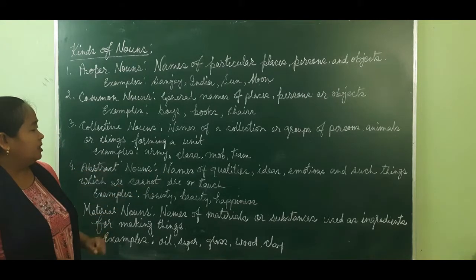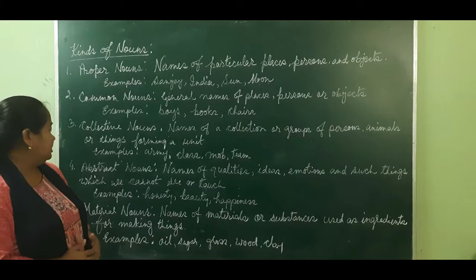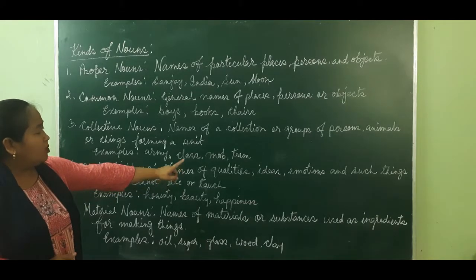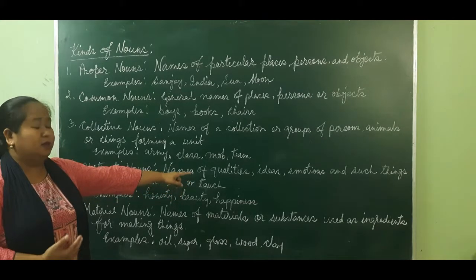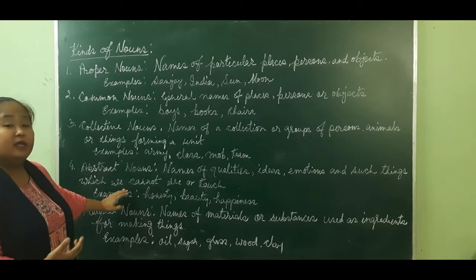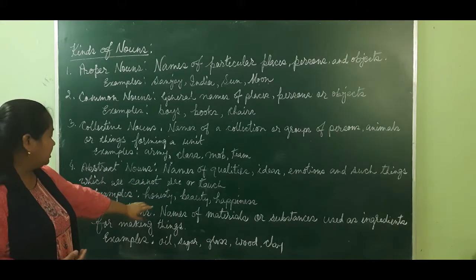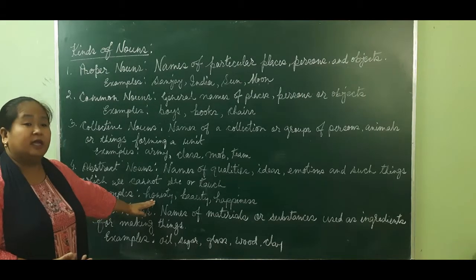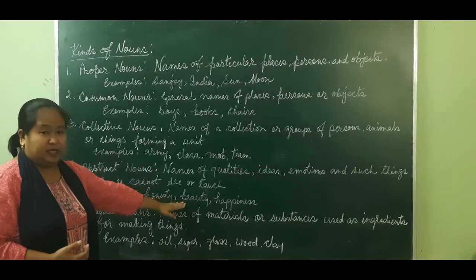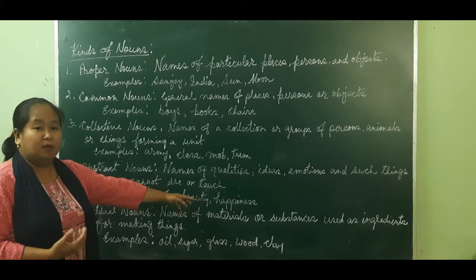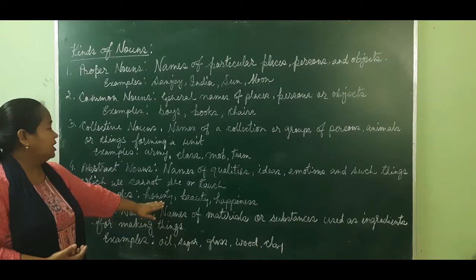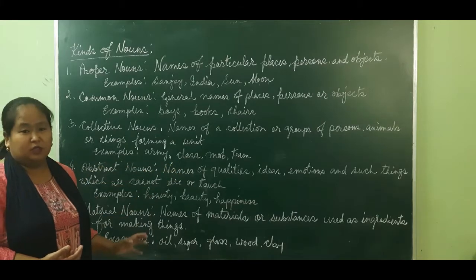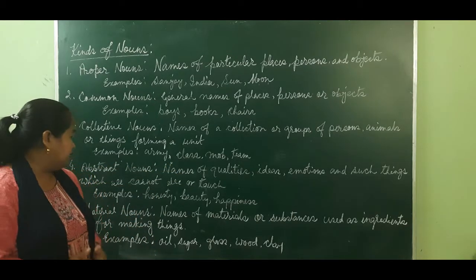Abstract nouns are names of qualities, ideas, emotions, and such things which we cannot see or touch. For example: honesty — a quality of a person that we cannot see or touch. Beauty. Happiness — a name of a feeling. Sadness. Things that we cannot see or touch, or qualities, ideas, and emotions — they are called abstract nouns.